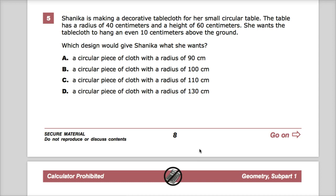Shanika is making a decorative tablecloth for her small circular table. The table has a radius of 40 centimeters and a height of 60 centimeters.